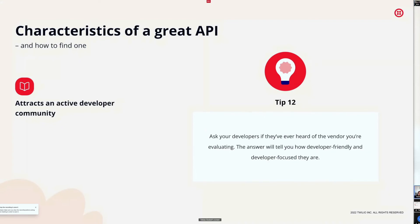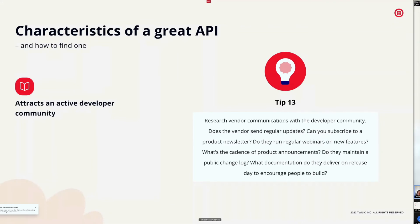A great API should attract an active developer community. Ask your developers if they've heard of the vendor you're evaluating — the answer tells you how developer-friendly and developer-focused that vendor is. Research how the vendor communicates with the developer community: do they send regular updates, offer a product newsletter, run webinars on new features? What's the cadence of product announcements? Do they maintain a public changelog and deliver documentation on release day to encourage people to build?